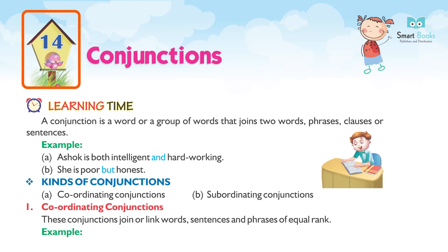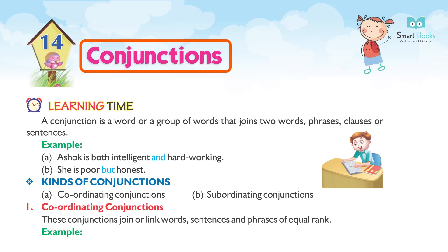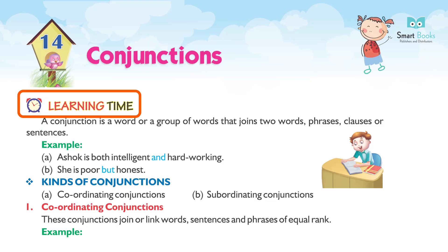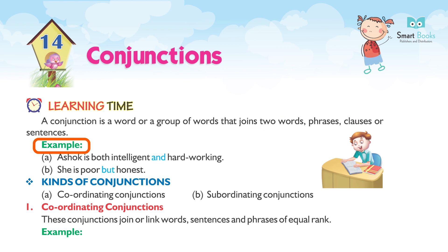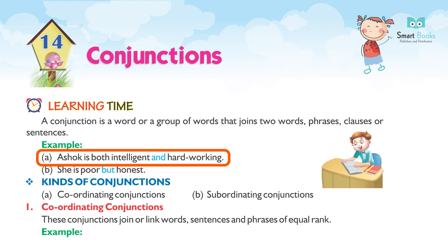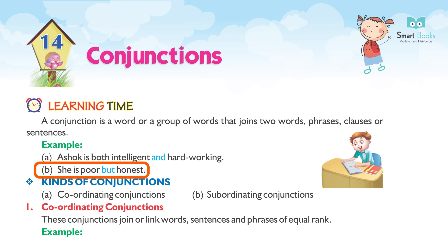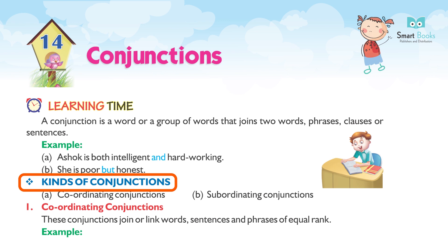Chapter 14: Conjunctions. A conjunction is a word or a group of words that joins two words, phrases, clauses, or sentences. Example: (a) Ashok is both intelligent and hard-working. (b) She is poor but honest. Kinds of conjunctions.